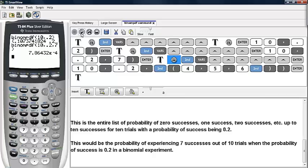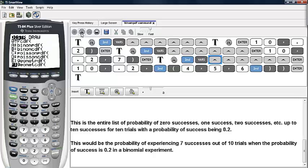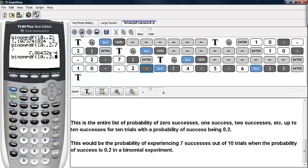Let's answer the third question. Go back under distributions by hitting 2nd and VARS, scrolling back up to binompdf. The number of trials is 10, the probability of success is 0.2, and this time we're going to enter a list of trial numbers. We'll enter 4, then a comma, then 5, then a comma, and then 6, and we'll end the list.